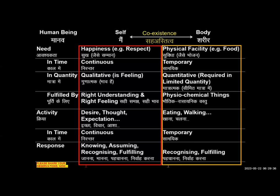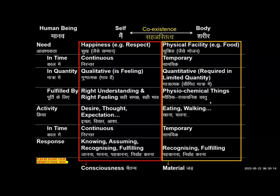Today we will try to observe directly within ourselves that our needs are different from the needs of the body, and they are fulfilled differently. Our activities are continuous; the body's are not continuous. Our responses are based on knowing and assuming, whereas in the body it is just recognizing and fulfilling. The body doesn't have a choice - it has definite recognition and fulfillment. Our recognition and fulfillment keeps changing based on our assumptions. We will try to reflect on this all day today - not just the words or information, but try to directly observe it within ourselves.